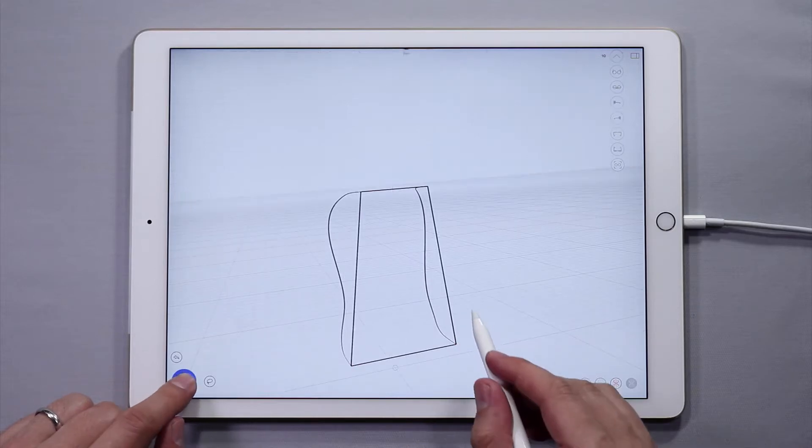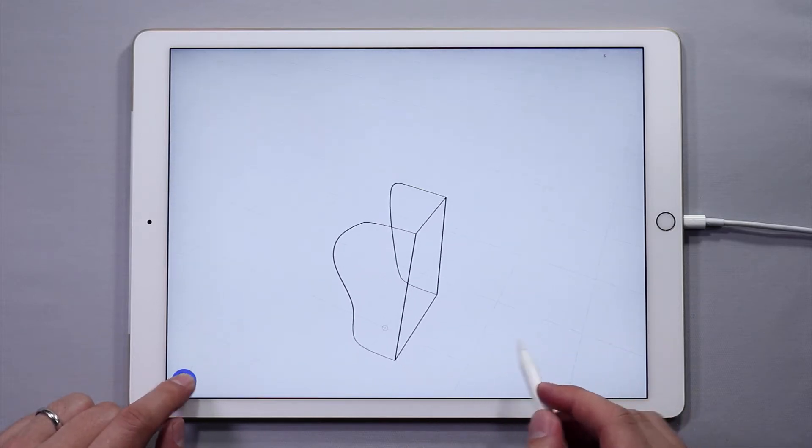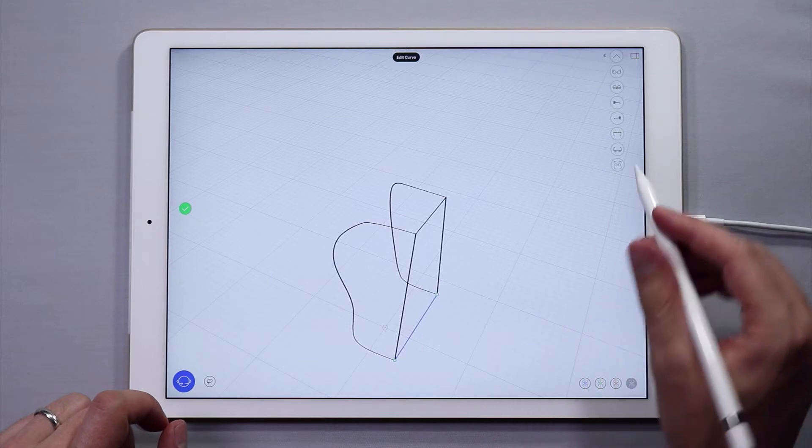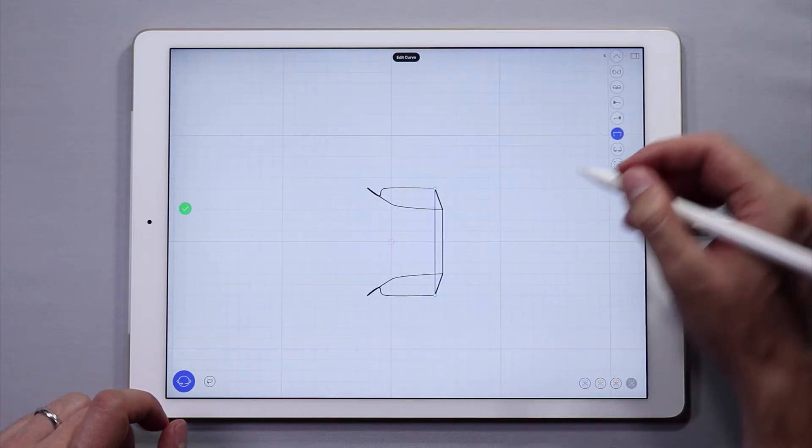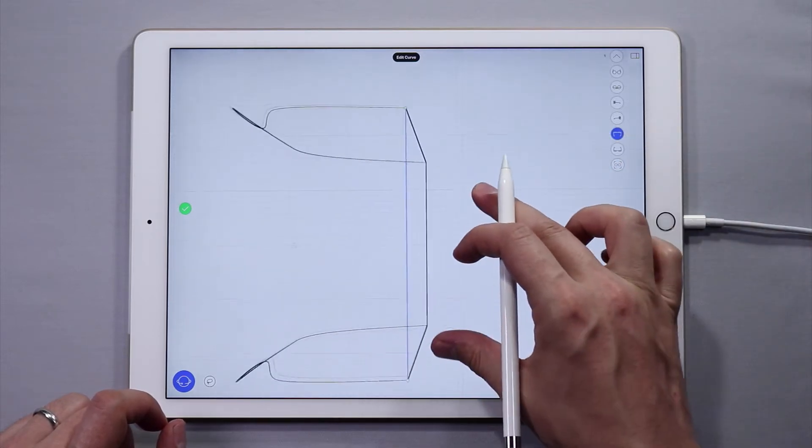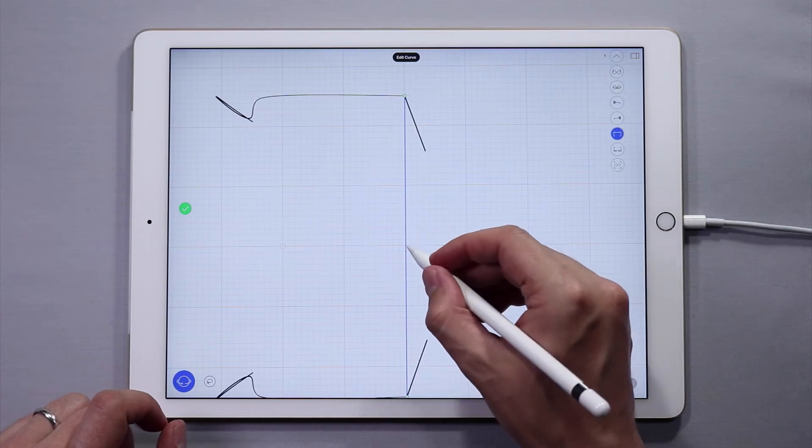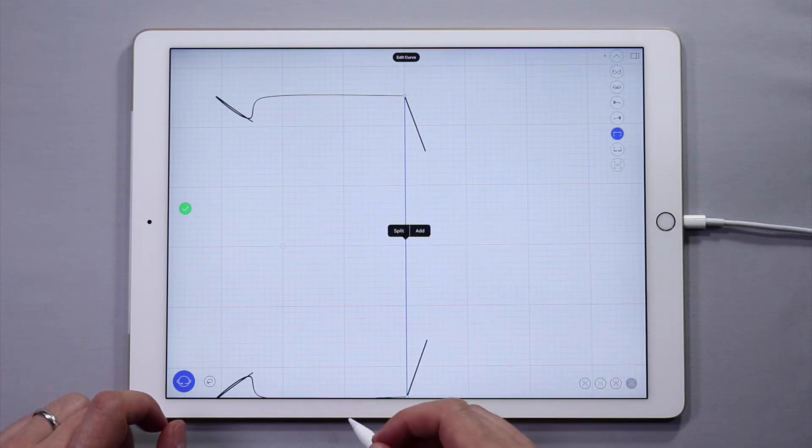Tap on the new curve so we can edit it. Let's go to the top view. Now tap and hold on the curve to add a control point. Move the control point to add more curvature.